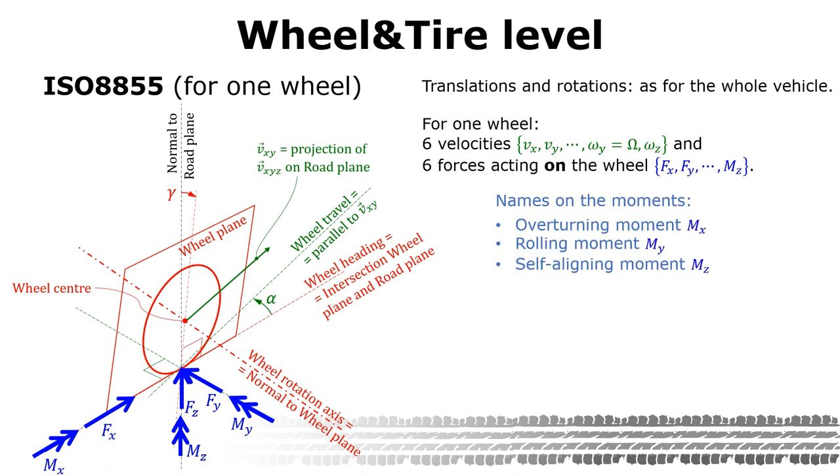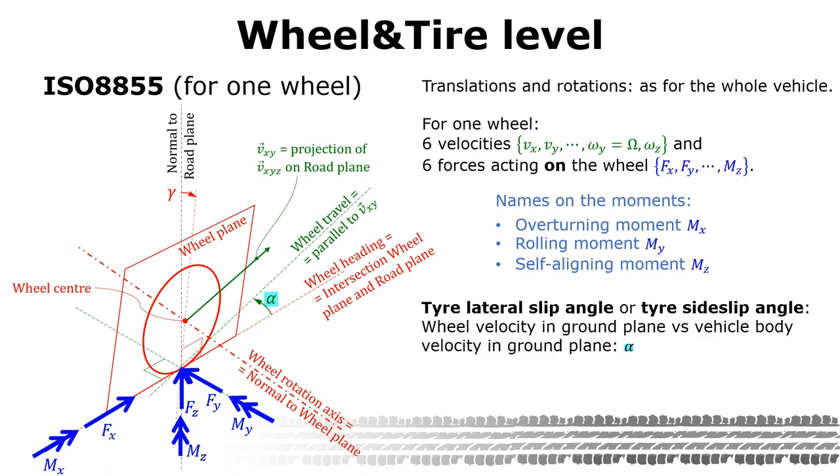The moments have these specific names which you might, it might be good to remember. The wheel velocity in ground plane can be different than the vehicle body direction in the ground plane. The angle between these velocities is called tire lateral slip angle and it's denoted alpha. The wheel plane can also be tilted in roll direction. This tilt angle is called camber angle and it's denoted gamma.